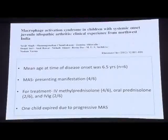In our unit's data published 7 years back, we had 6 patients. MAS was the presenting feature of systemic JIA in 4 of the 6 patients. IV methylprednisolone was used in 4 of them, oral prednisolone and IVIG in 2 of them, and one child expired due to progressive macrophage activation syndrome.